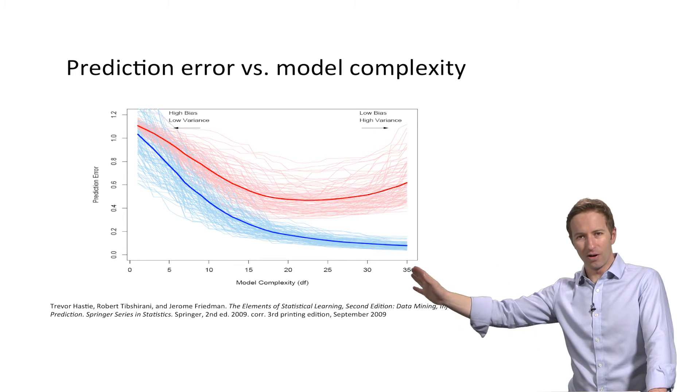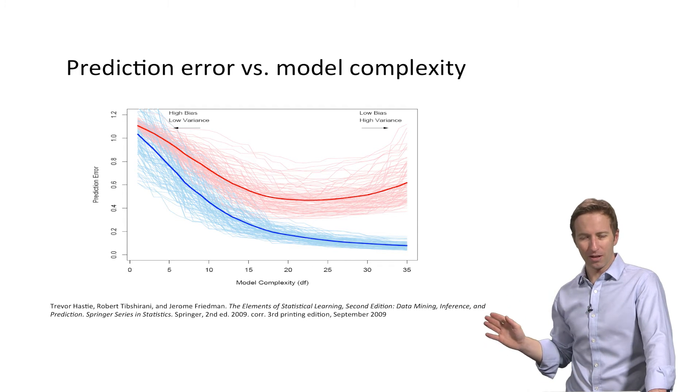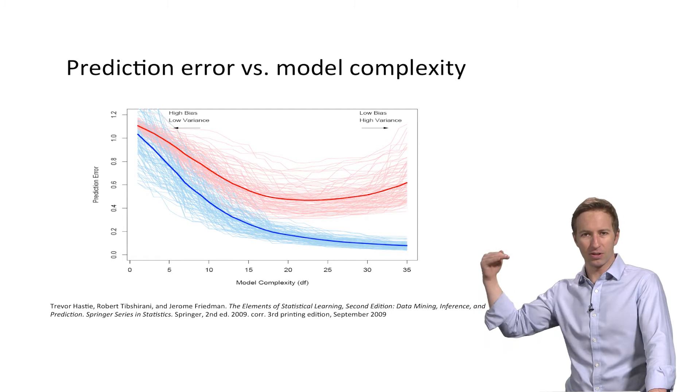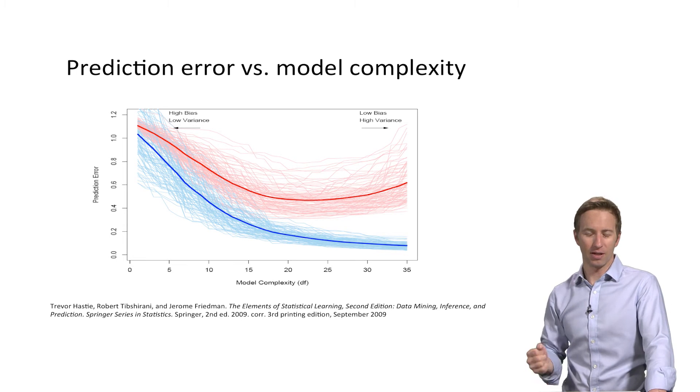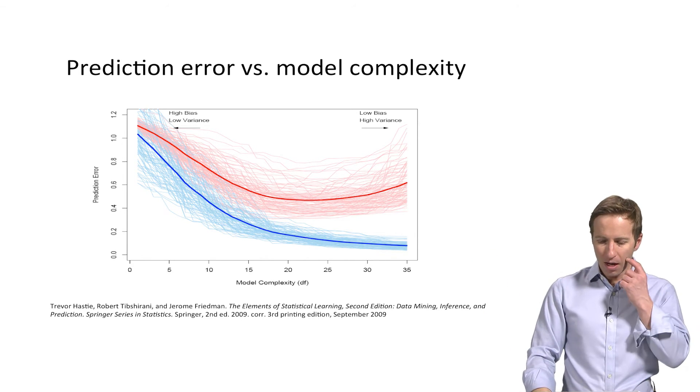So on the left end, we have underfitting on the right end, we have overfitting. And the job of a machine learning classifier is to find some point in the middle, where it's not overfitting or underfitting and has the lowest prediction error on holdout data.